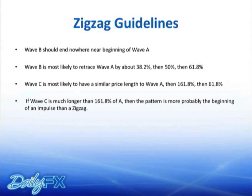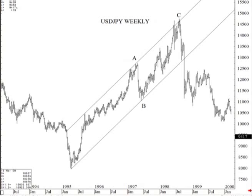If wave C is much longer — say, two times longer than wave A — you're probably not in a correction anymore. You're probably in the beginning of a larger impulse. At that point, you would look for a wave four correction. Here's an example of a zigzag — this was the first wave of the larger triangle. Triangles tend to have zigzags within them, and you can see the ABC formation. It would not surprise me if wave C was about 61.8% of wave A in this instance.